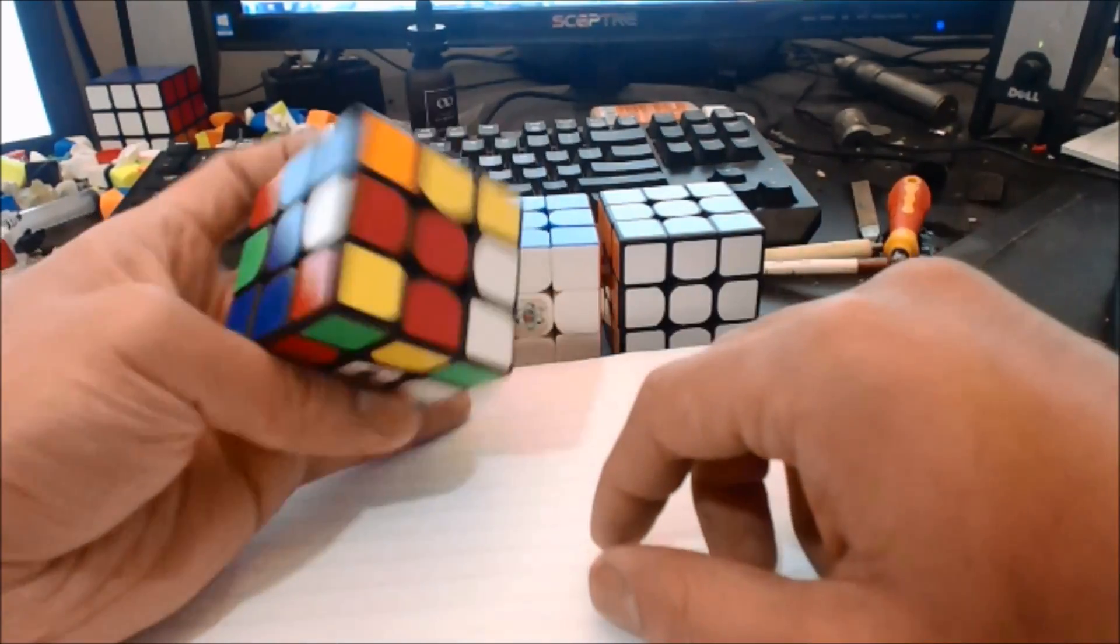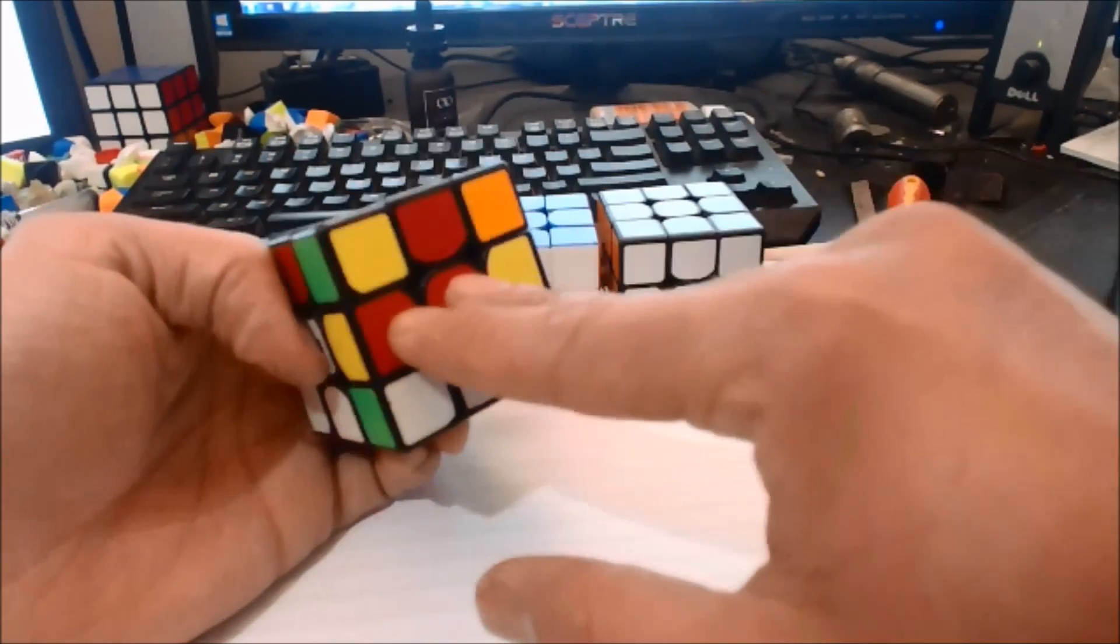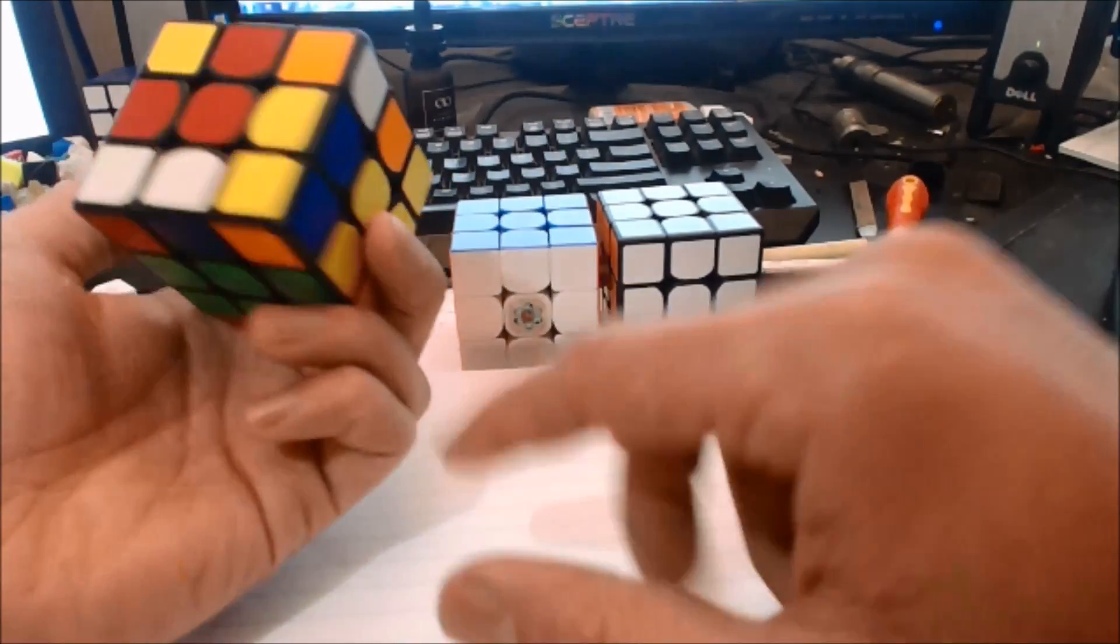Just right off the bat I see 1 by 1 by 2 here. These two are, and there's another one right here, so there's one right here and one right here.